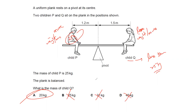In multiple choice questions (Paper 2), only the final answer is required — they don't check working. For structured questions, writing the formula, showing calculations, and getting the answer each carry marks. But in MCQs, what matters is the correct final answer.